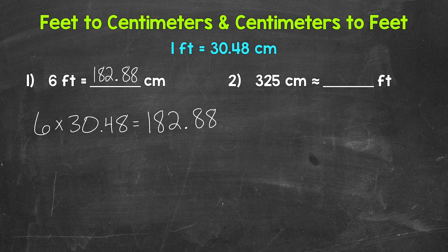As far as centimeters to feet, well, each group of 30.48 centimeters equals a foot. So how many groups of 30.48 centimeters in 325 centimeters? So we need to do 325 divided by 30.48.